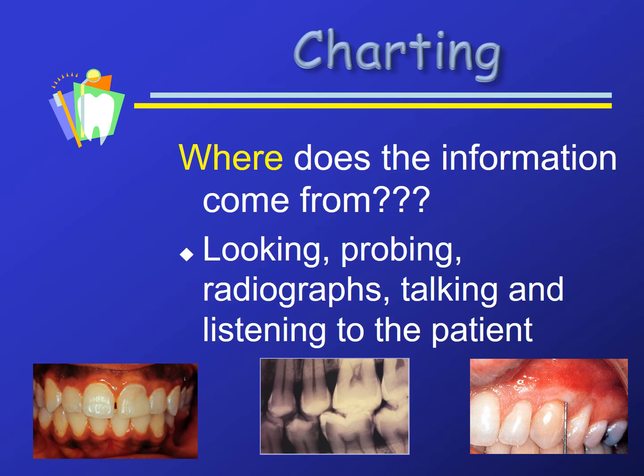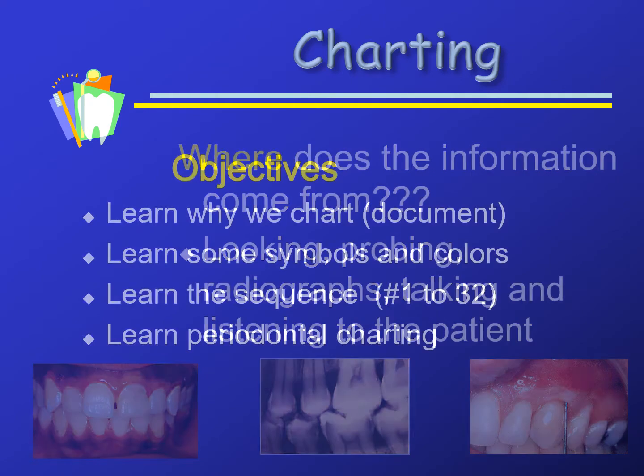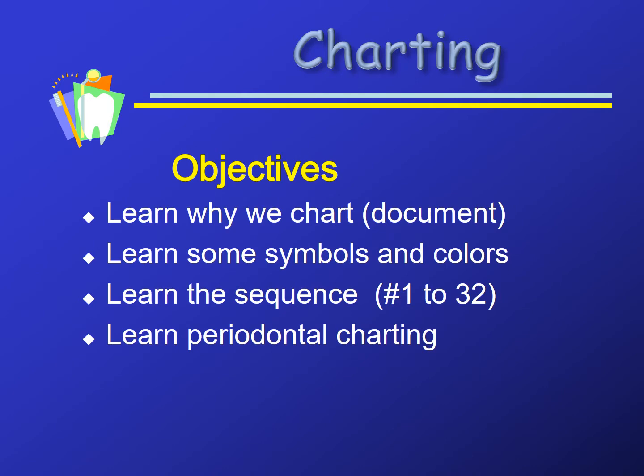The chart may also be summoned for identification of a patient. Dental radiographs can be used for forensics to identify a patient. The information we document comes from looking, probing, interpreting radiographs, and talking and listening to our patients. Our objectives are to learn why we chart, some symbols and colors, the sequence of charting, and periodontal charting.